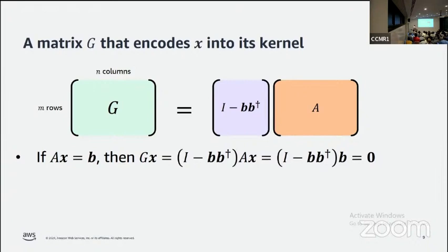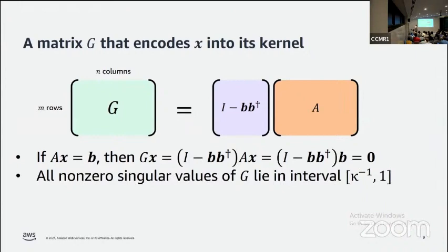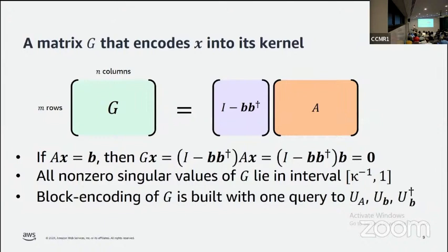It's easy to verify that if x satisfies Ax = b, then Gx equals zero. So x is indeed in the kernel of G. A more non-trivial observation is that if A satisfies the promise that all non-zero singular values lie between 1/κ and 1, then G will also satisfy that promise. Finally, we can easily build a block encoding for G using our block encoding for A and one query to the state preparation unitary for b and its inverse.